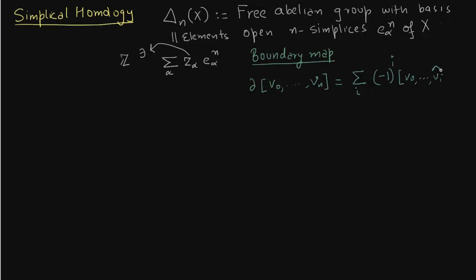So I put hat on vi meaning that that vertex is not there in the expression from v0 to vn. What does that mean will be clear in a minute.